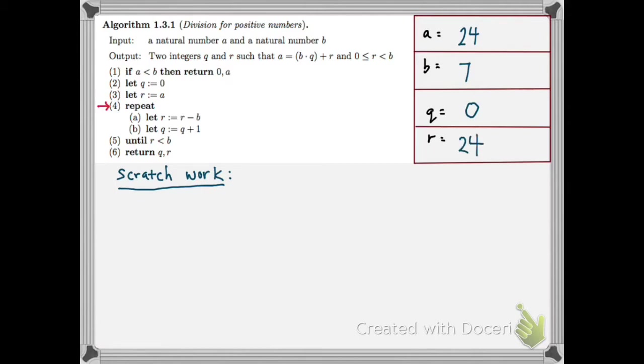And now I enter the repeat loop. I'm going to let R equal R minus B. And so I look at the values there that I have, 24 minus 7, and I get 17. And that's the new value for R. And now Q is going to be Q plus 1. So 0 plus 1 is 1, and that's my new value for Q.